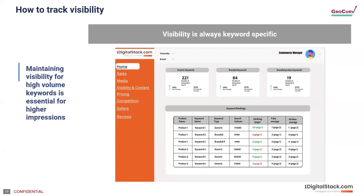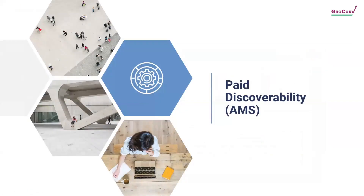This is a cool way of tracking: list your product name, decide which keywords to track it for, whether each keyword is generic or branded, and what the search volumes are — obviously focusing on high search-volume keywords. Then track your rank for that keyword — whether you're on page one, two, or three — which has a big impact on impressions and visibility. For example, if a keyword has a very high search volume like 74,000 and you're on page two, it makes a lot of sense to spend some money to get to page one. At 1DS we do this in an automated way, but it's also possible to do manually for a few important keywords, checking rankings every few days.